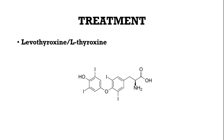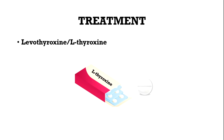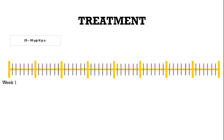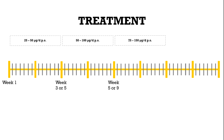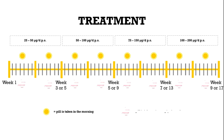Hashimoto thyroiditis is treated with lifelong oral administration of levothyroxine, also called L-thyroxine, which is T4. Initially 25 to 50 micrograms per day per os are given. The dosage is increased every 2 to 4 weeks by 25 to 50 micrograms per day until a dosage of 100 to 200 micrograms per day is reached. Pills are always given in the morning with an empty stomach. The aim of the whole therapy is to get TSH to a lower normal range, but never suppressed.